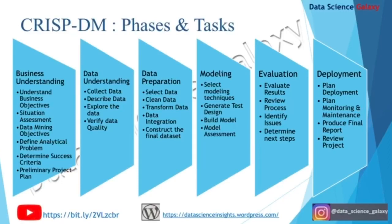The second phase is data understanding. Initially we do data collection, get familiarity with the data, and identify data quality issues. We describe and explore the data to identify outliers and anomalies. As part of this phase we produce reports such as a data collection report, data description report, and data quality report. We ask important questions like: is the data from the domain under consideration? Are there errors in the data? Are there redundant or repetitive entries?